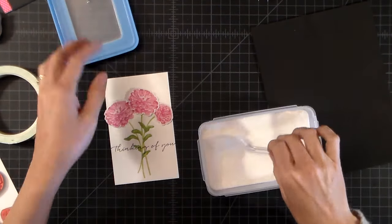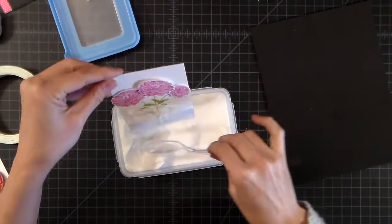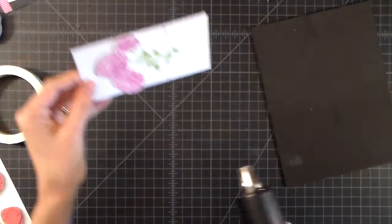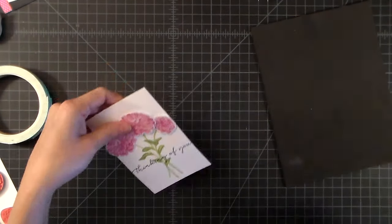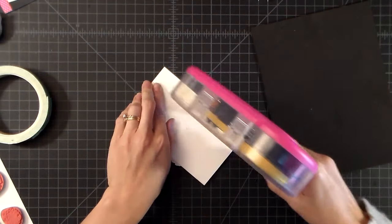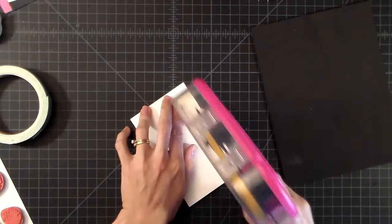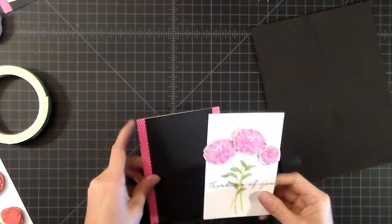I am going to add a little bit of clear embossing powder to this and then heat set that with my heat gun. I'm going to add some adhesive to the back and then I'm just going to adhere it onto my card panel, onto my card base.